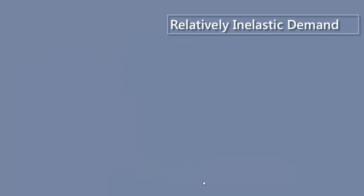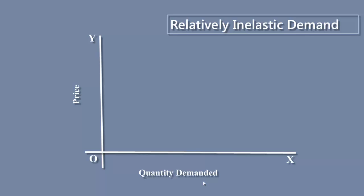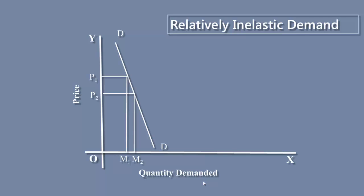Relatively inelastic demand refers to a situation where the percentage change in quantity demanded is less than the percentage change in price. The demand curve is relatively steep. When the price moves down from P2 to P1, the percentage change in price is 50%, but quantity demanded increases from M1 to M2, accounting for only 20% change in quantity.